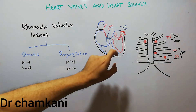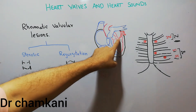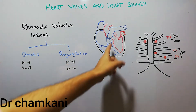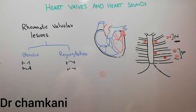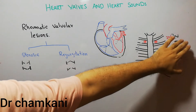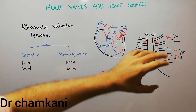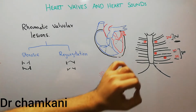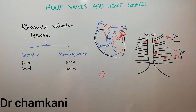Now if there is some abnormality in the valves — for example the mitral valve and the aortic valve — if there is any abnormality in these valves then the first and second heart sounds will be different, and apart from differences in these heart sounds there will be some extra heart sounds, which will be called murmurs.